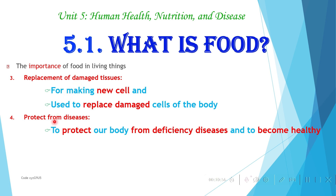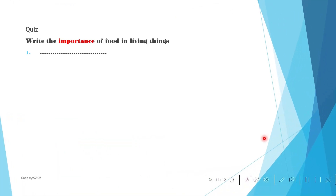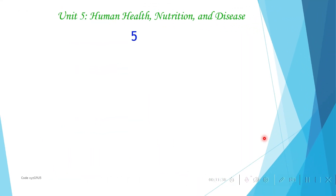The fourth importance of food is to protect from disease. To protect our bodies from deficiency diseases and to stay healthy, we have to eat sufficient food such as fruits, vegetables, and other food sources. These are the four basic importances of food. As your activity, write the importance of food in living things based on our discussion — four points — and put it in the comment section. In the next class, we'll talk about nutrition, part 5.2. Until then, have a nice time. Bye-bye.